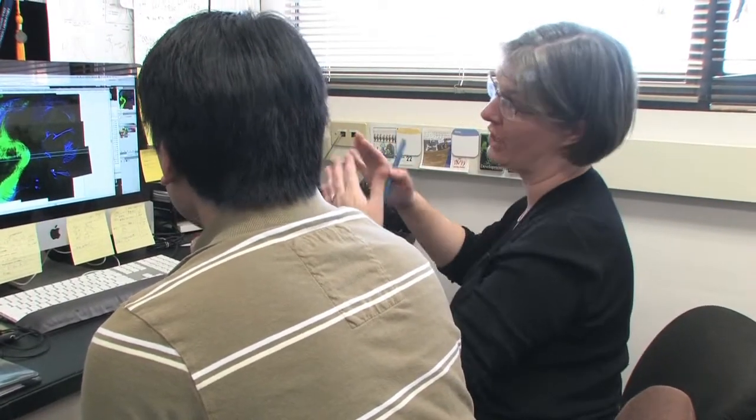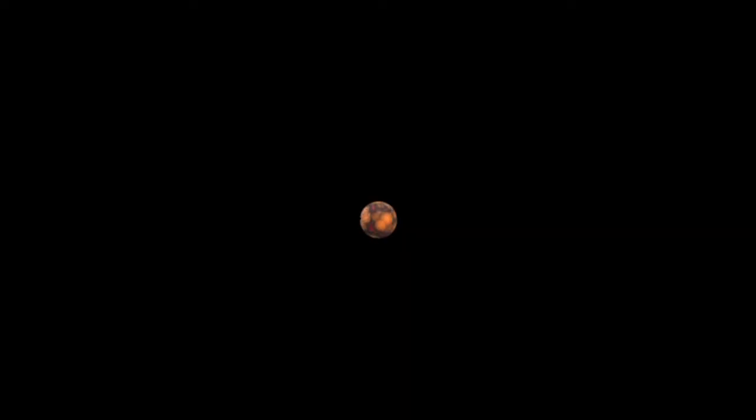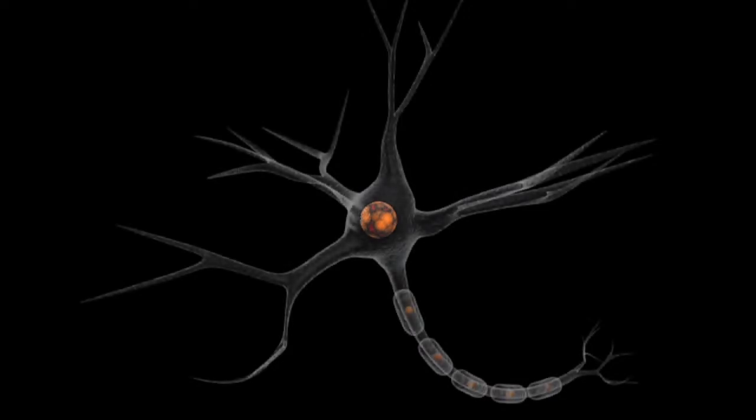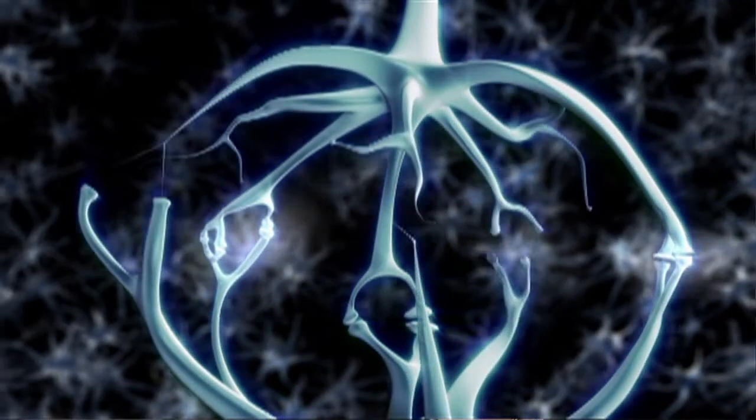The formation of neural circuits is a three-step process. A cell, an undifferentiated cell, first has to decide to become a neuron, and it will then, as a function of being a neuron, extend a projection called an axon.